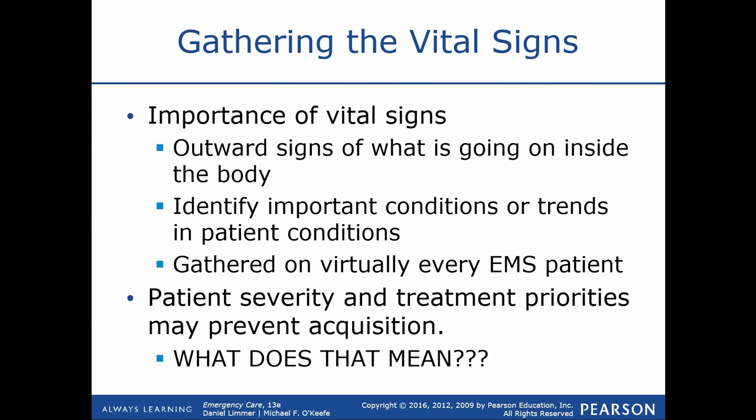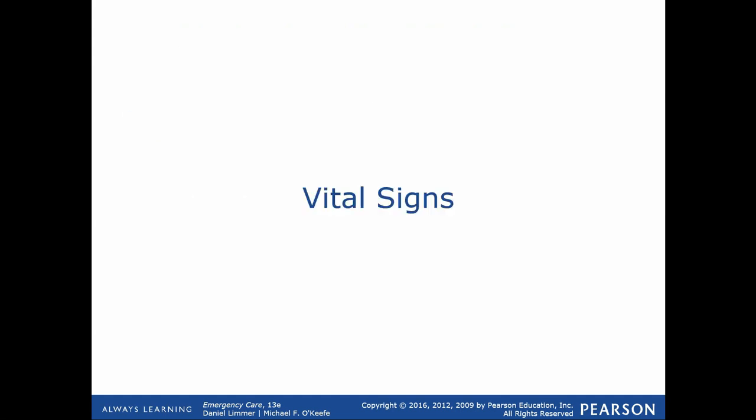Vital signs are important — assessing blood pressure, pulse rate, quality, and regularity all clue us in as to how our patient is doing. We can use vital sign findings to reinforce our theories on what could be wrong, but these alone won't save a life or tell us exactly what's going on. We should always focus on the SAMPLE history and physical assessment as a higher priority. If resources allow multitasking, do it all in tandem, but with limited personnel, vital signs should not come ahead of physical assessment or SAMPLE history.